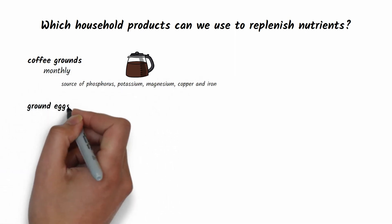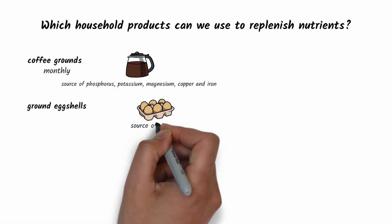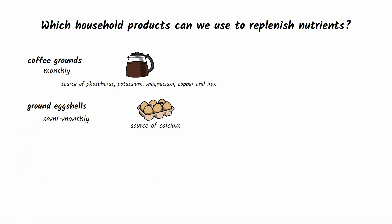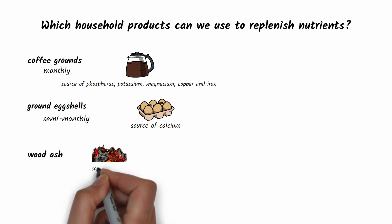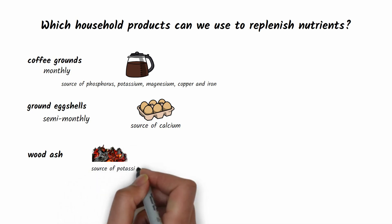What household products can be used to replenish nutrients? Coffee grounds, which can be added to the plants once a month. Ground eggshells provide the calcium needed for plants. Just add them twice a year.